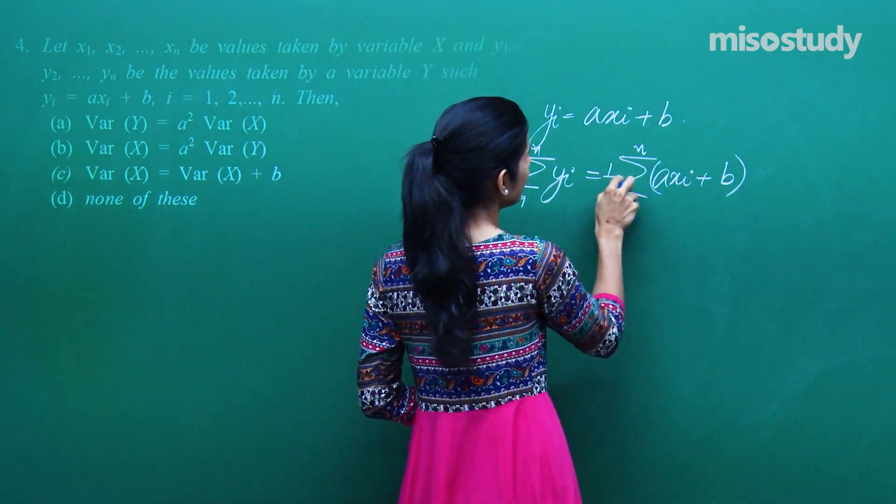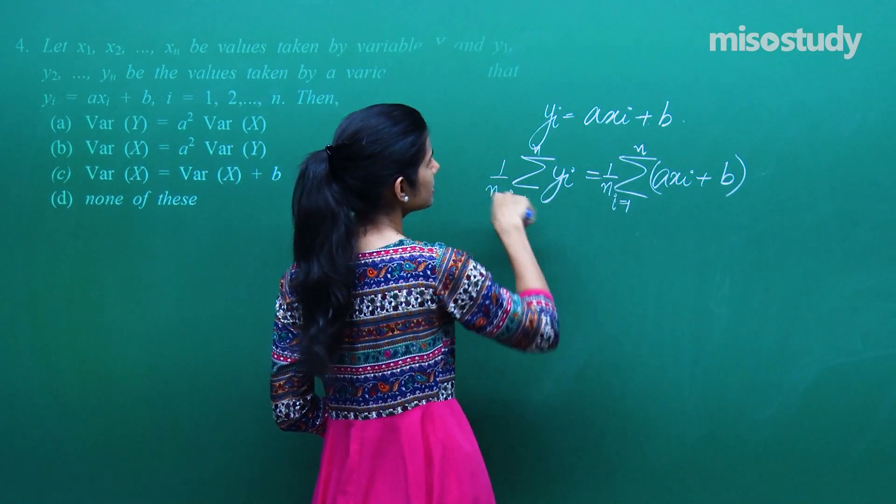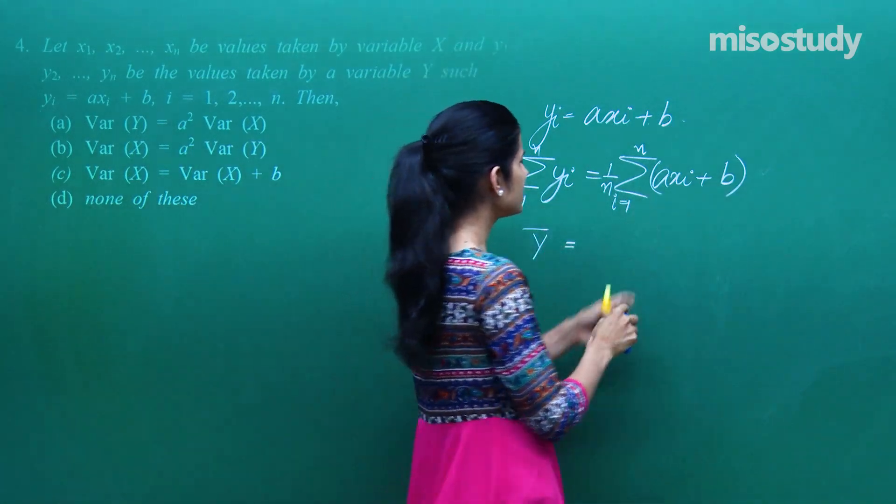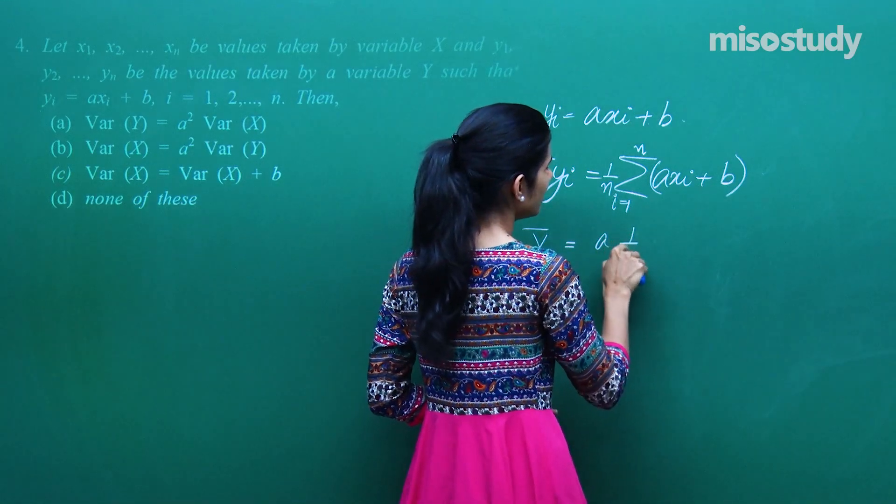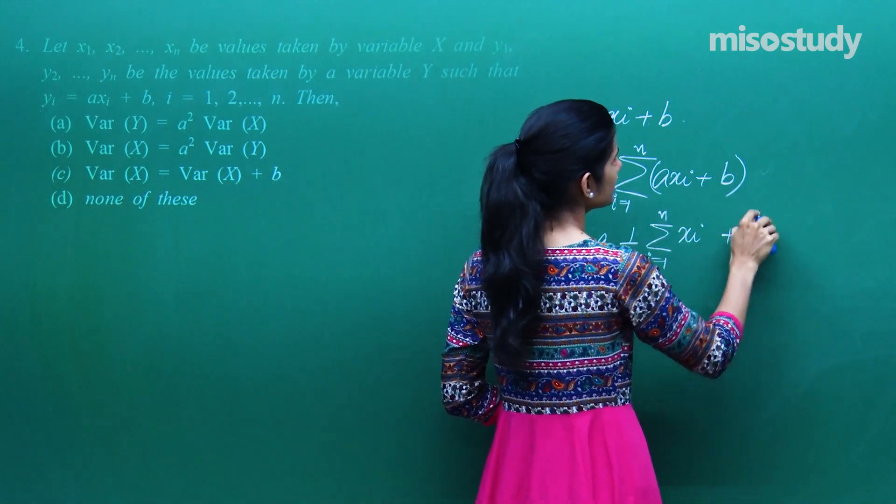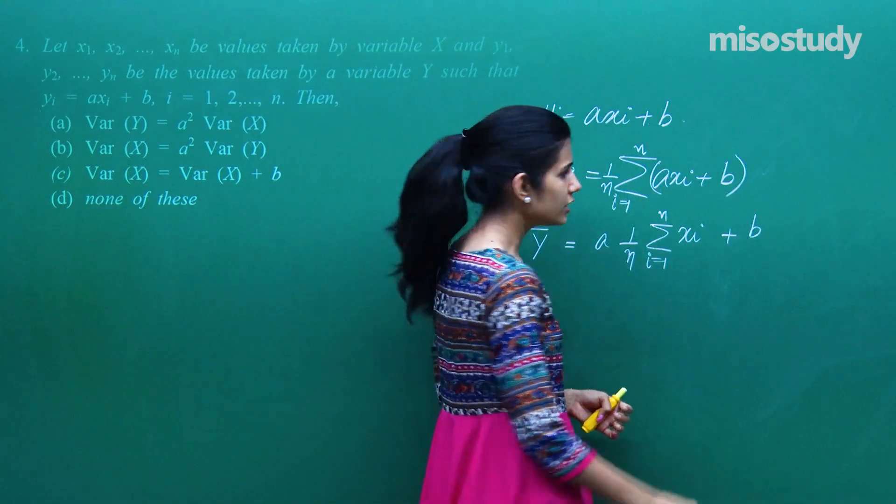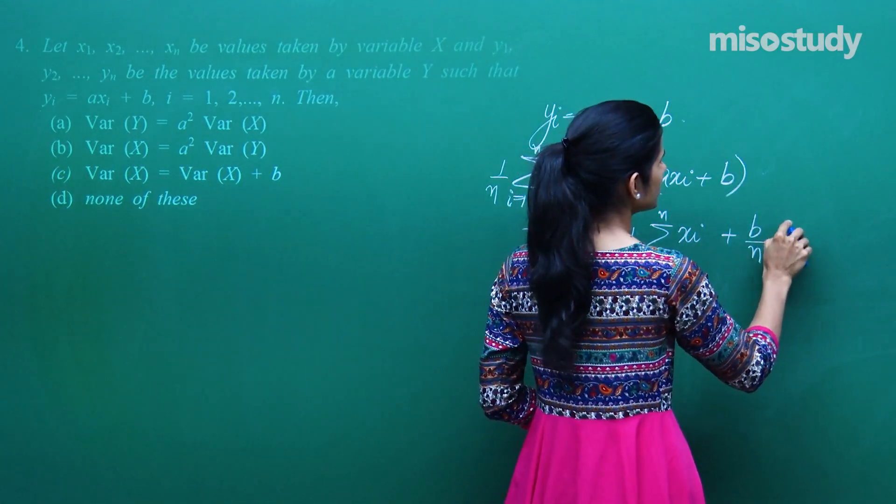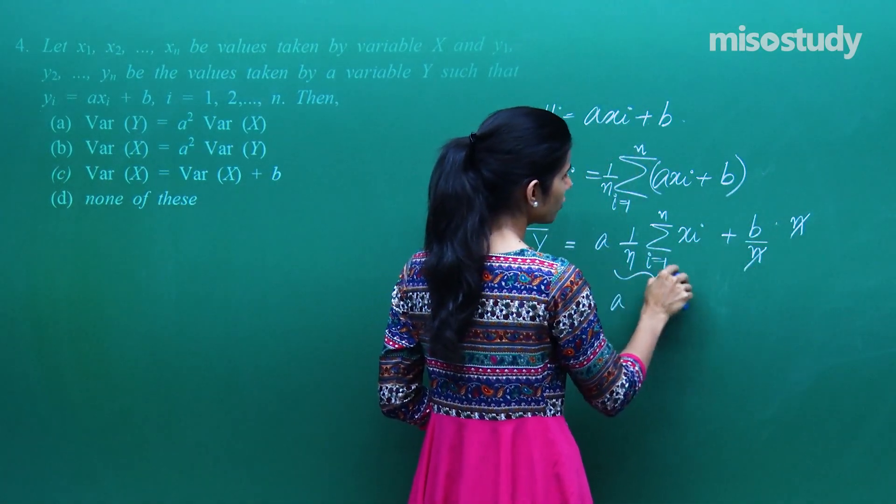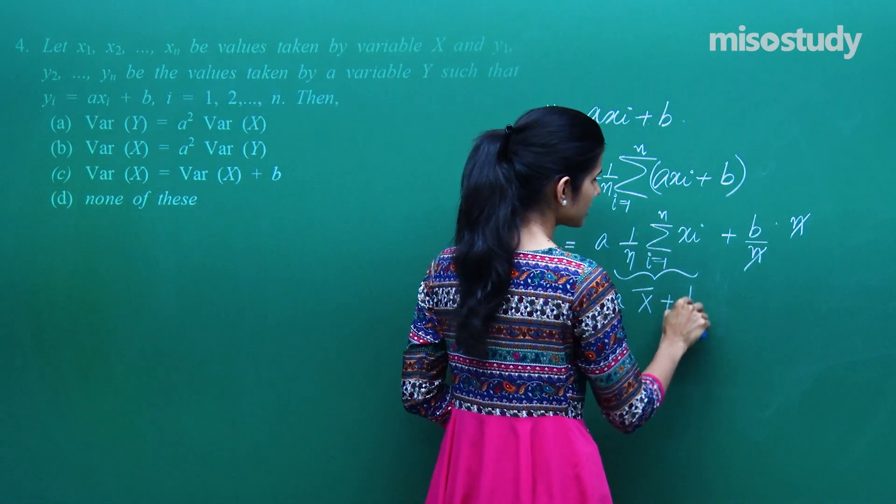Divide by n, divide by n. What is this? This is nothing but y bar and what is this? A bahar aega, bachega 1 by n summation xi, i going from 1 to n plus b summation i going from 1 to n. So this is n, NN cancels out. You are left with A into x bar plus b.